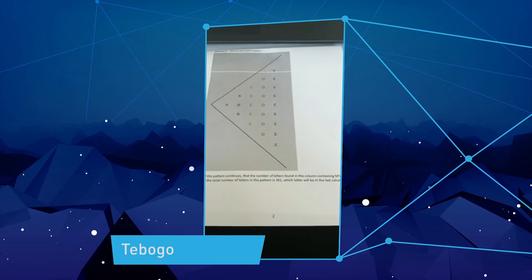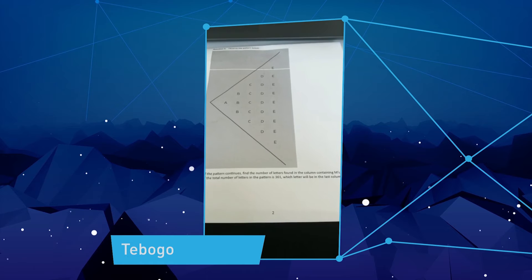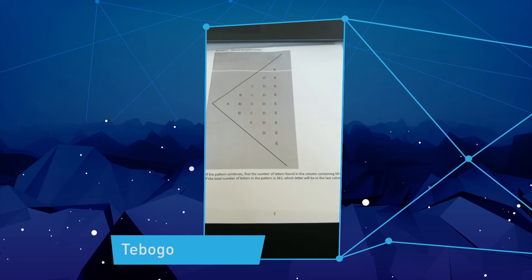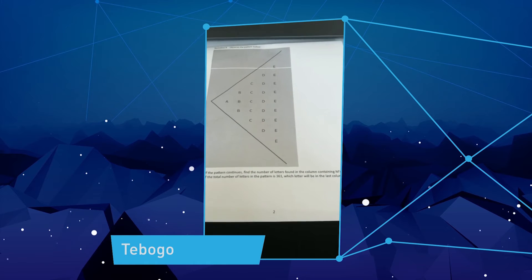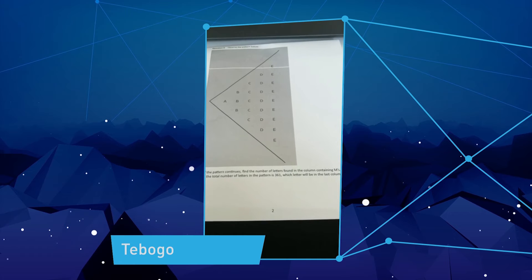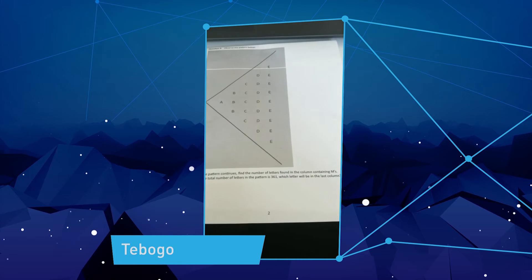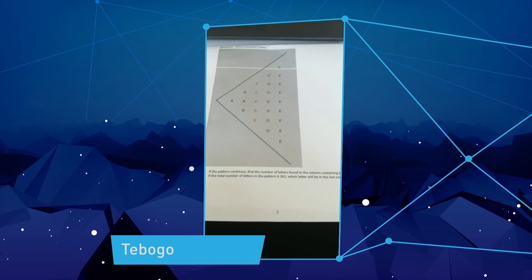Find the number of letters found in the column containing M's. And the second one says if the total number of letters in the pattern is 361, which letter will be in the last column? I'd really appreciate your help.